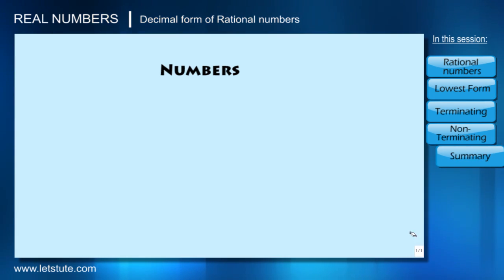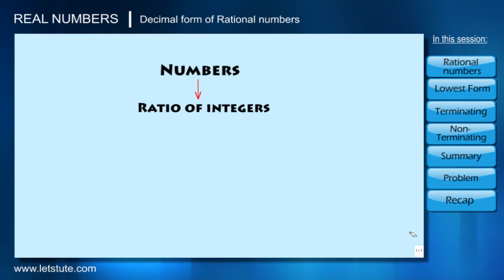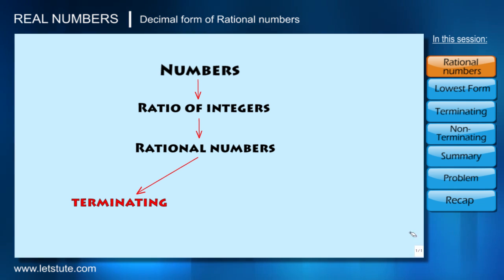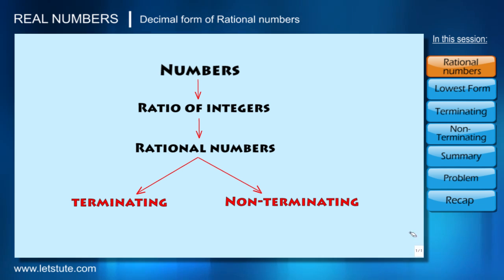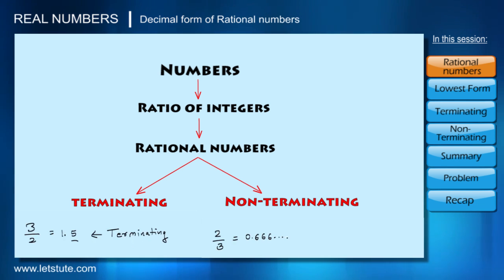From our previous session, we know that numbers in the form of a ratio of integers are called rational numbers. The decimal form of every rational number either terminates or goes on repeating at certain digits. For example, 3/2 is a rational number and its decimal form is 1.5, which terminates. 2/3 equals 0.6666... repeating forever — this is the non-terminating decimal form.